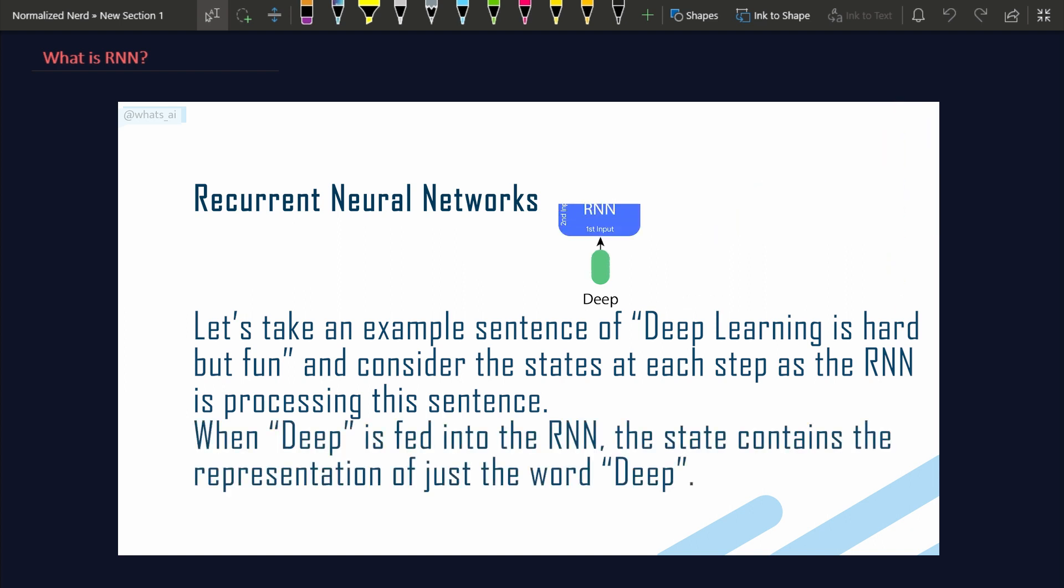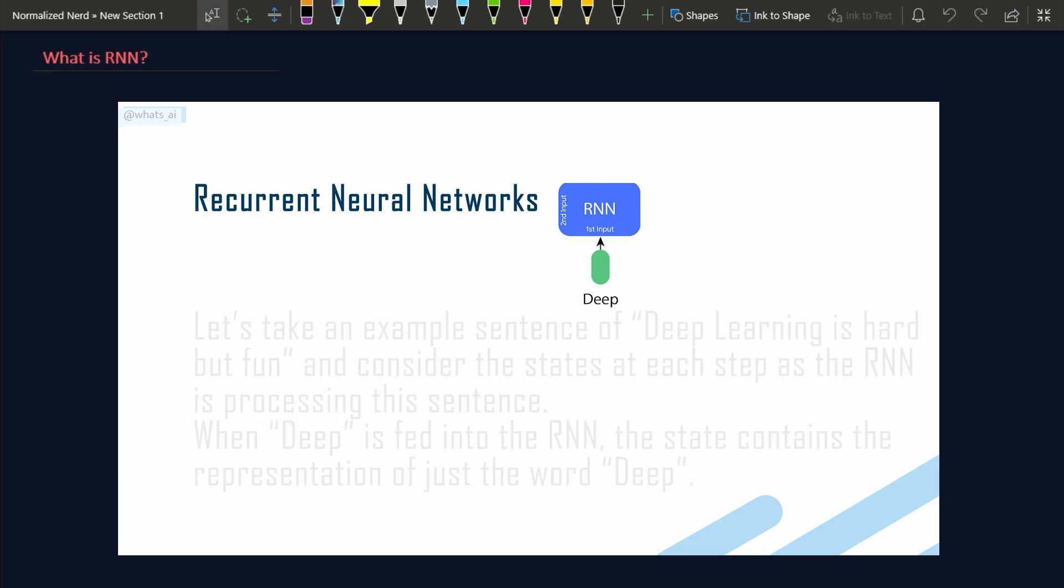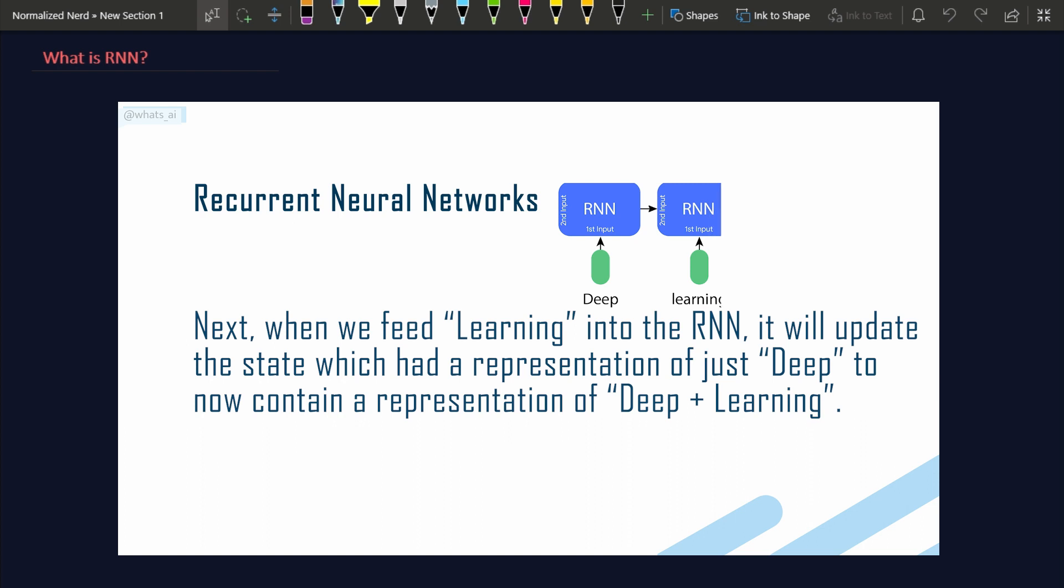When 'deep' is fed into the RNN, the state contains the representation of just the word 'deep'. Next when we feed 'learning' into the RNN, it will update the state which had a representation of just 'deep' to now contain a representation of 'deep plus learning'.